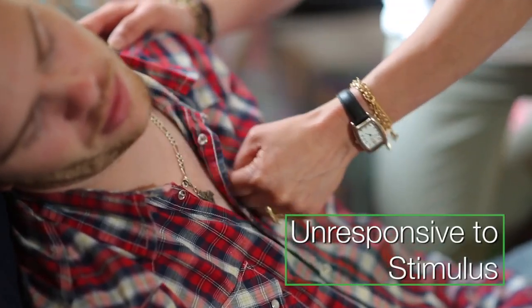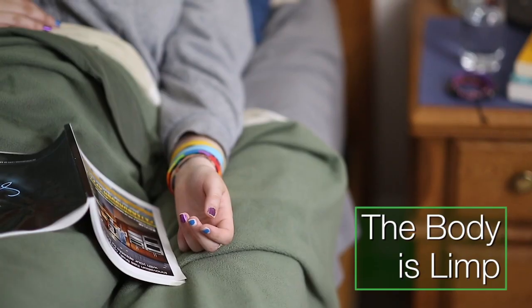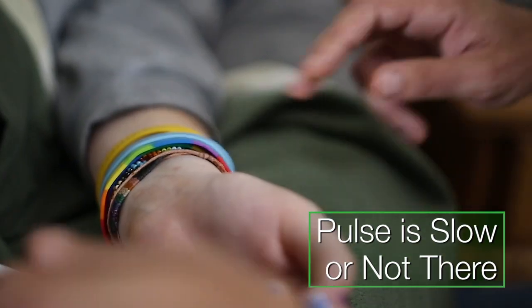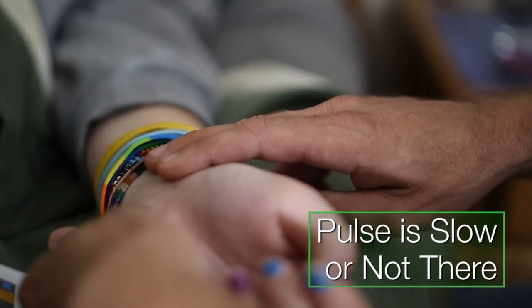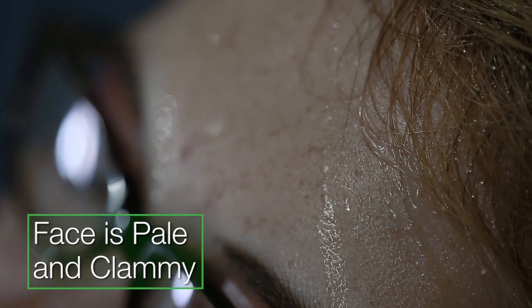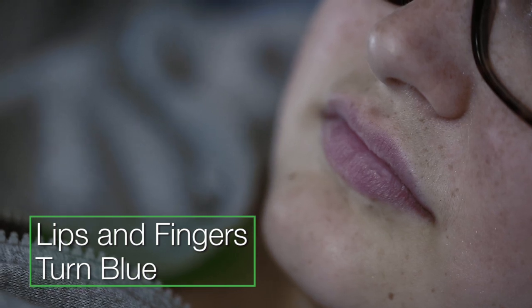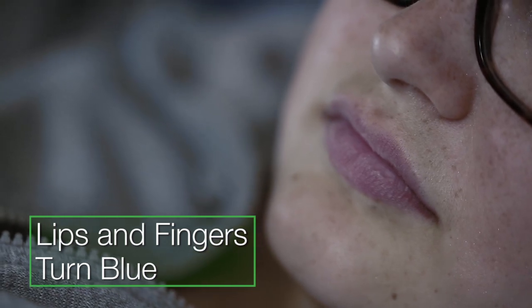The person is unresponsive to outside stimulus. The body is limp. Pulses slow, erratic or not there at all. The face is pale and clammy. Fingers and lips turn blue or purple and the person may also experience vomiting.